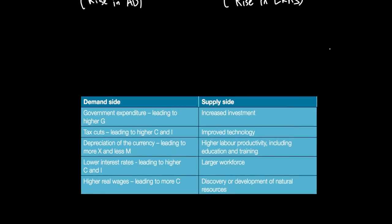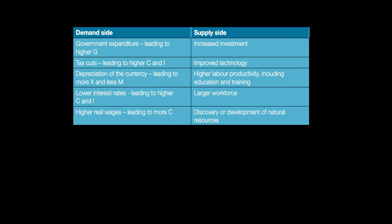Let's explore some of the causes of both demand side and supply side economic growth. On the demand side, any rise in C, I, G, or X minus M can cause the AD curve to shift to the right and therefore can cause actual economic growth to happen.